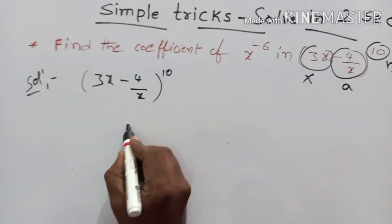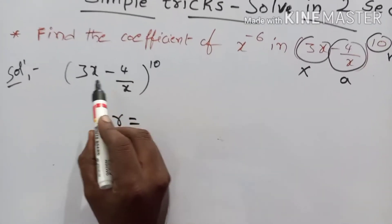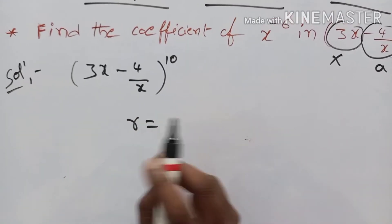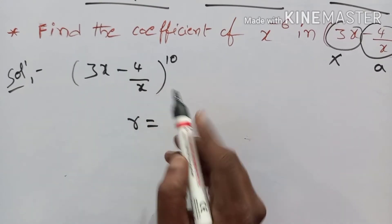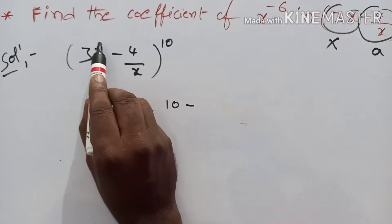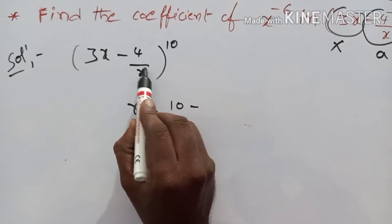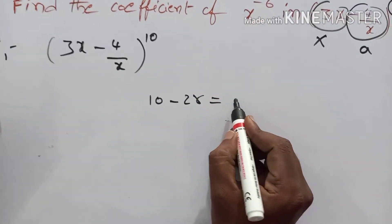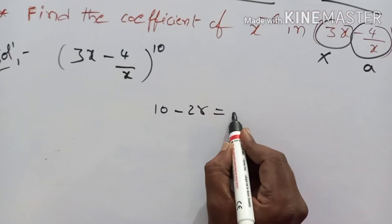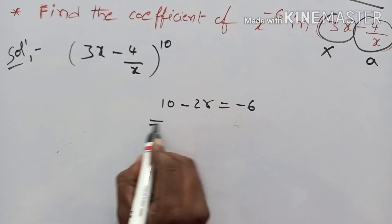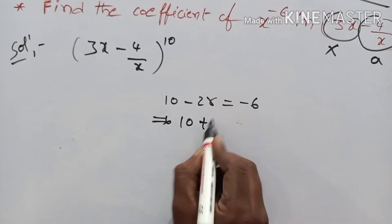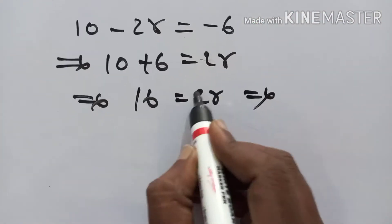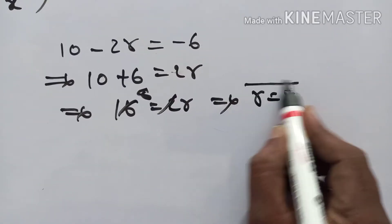First, find the r value. Here x power is 1, and in the denominator x power is also 1. So 1 plus 1 equals 2. Now 2r is set up. We need to find the coefficient of x power minus 6, so that equals minus 6, which implies 10 plus 6 equals 2r. That implies 16 equals 2r, so r equals 8.